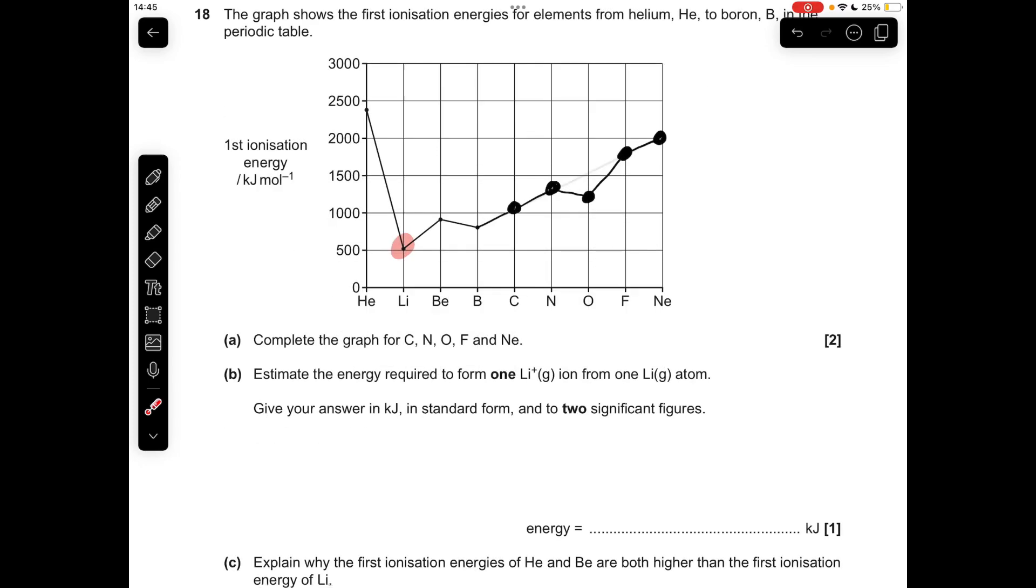Moving on to part B, where I've got to calculate the energy required to form one single lithium 1 plus gaseous ion from a gaseous atom. So you can see I've highlighted lithium's first ionization energy is about 500 kilojoules per mole. So to generate a mole's worth of ions, that much energy needs to be supplied. So obviously to generate a single lithium 1 plus ion, we divide the ionization energy by Avogadro's number. So to two significant figures, it's 8.3 times 10 to the minus 22.